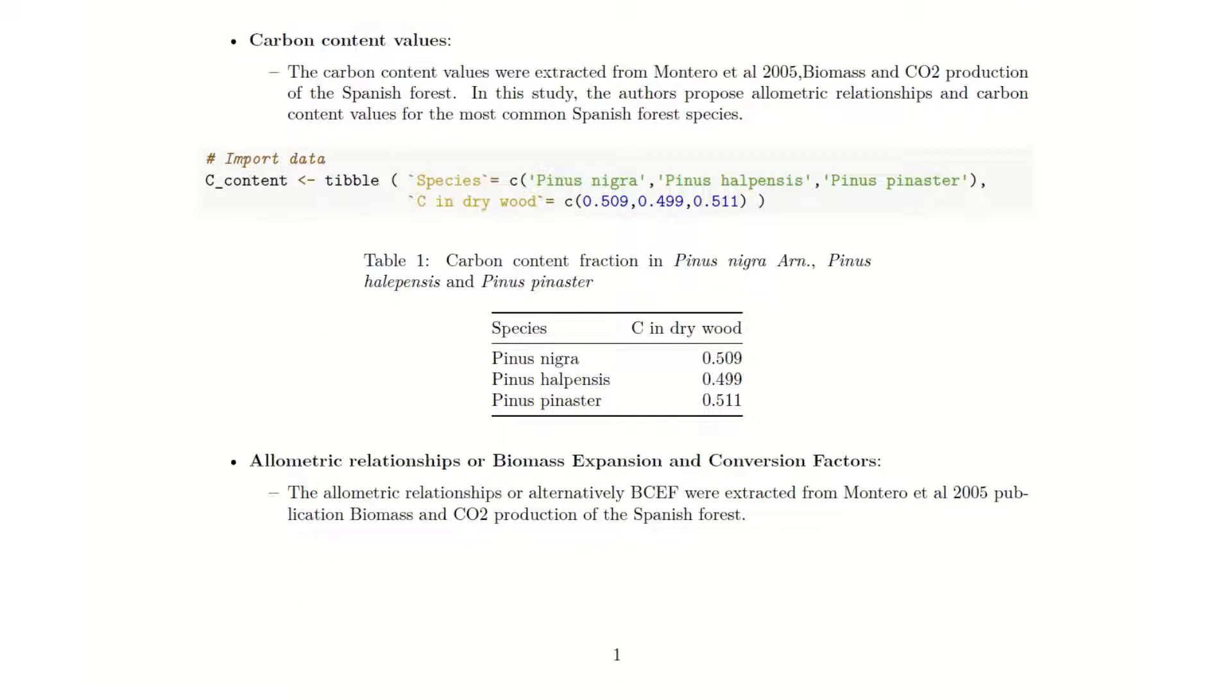Another type of data that is required for these calculations are the allometric relationships on biomass expansion and conversion factors. Biomass expansion and conversion factors, or allometric relationships, are relationships or parameters that compare two parts of the tree physiognomy. For instance, they can be either in form of percentage, let's say the trunk is 50% of the whole above ground biomass area, or expressed in another type of relationships.